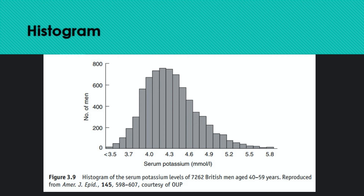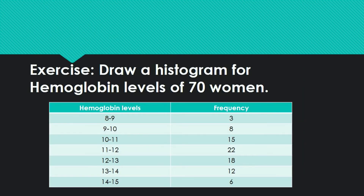Now draw the bars: the interval 4 to 5 has frequency 3, so draw a bar from 4 to 5 at height 3. Then 5 to 6 has frequency 6, so continue from where the previous bar ended — there is no gap. Keep adding bars for 6–7 and 7–8. The bars are adjacent with no gaps — this is the key technique. If you have questions, ask. The reverse-L axis technique should be remembered.